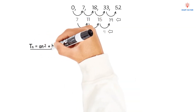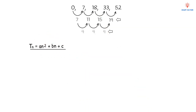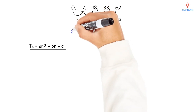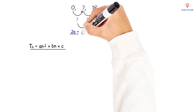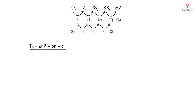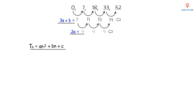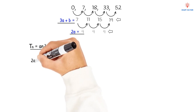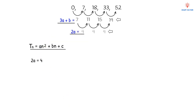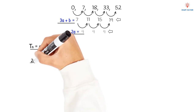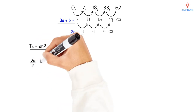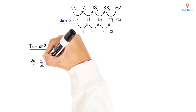To determine the values of a, b, and c, we write 2a next to the line of second differences and 3a + b next to the line of first differences. Looking at the second differences first: 2a = 4. Dividing both sides by 2, we get a = 2.